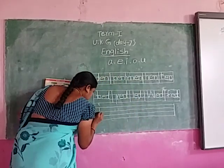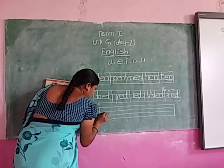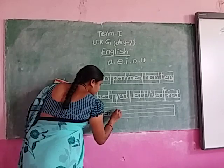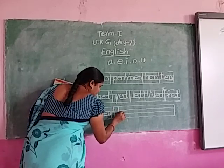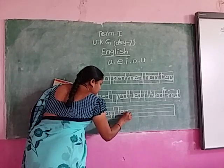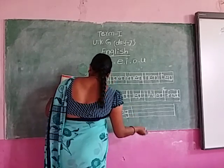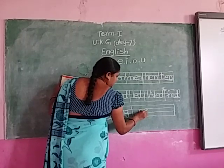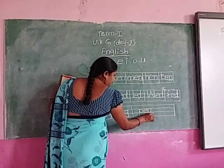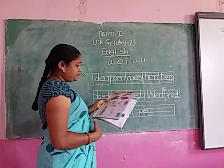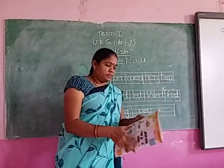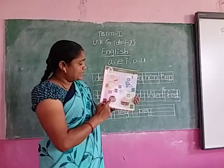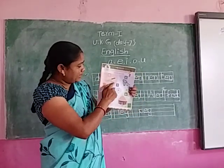Next, EG words. B, E, G — beg. L, E, G — leg. P, E, G — peg. See, you can write it one more time. Look at me.